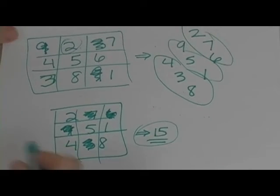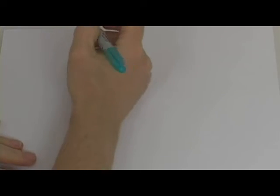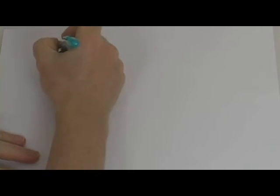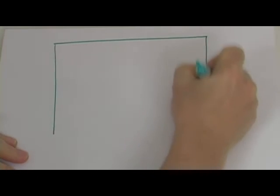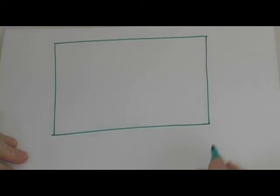Benjamin Franklin was actually an avid player of this game. Let me show you an upside down square. So this is going to be a 4 by 4, so we're going to draw 16 squares.